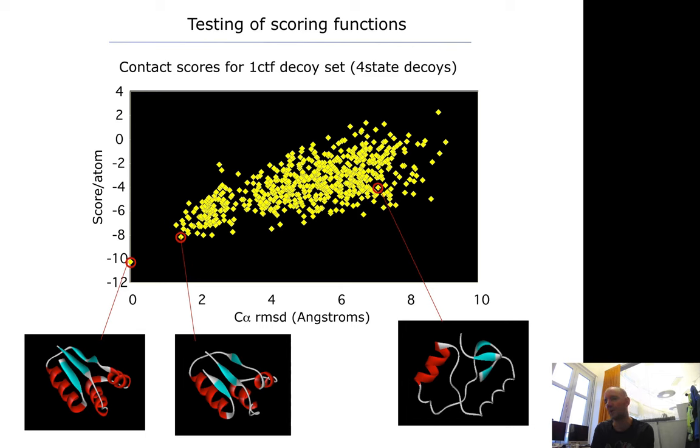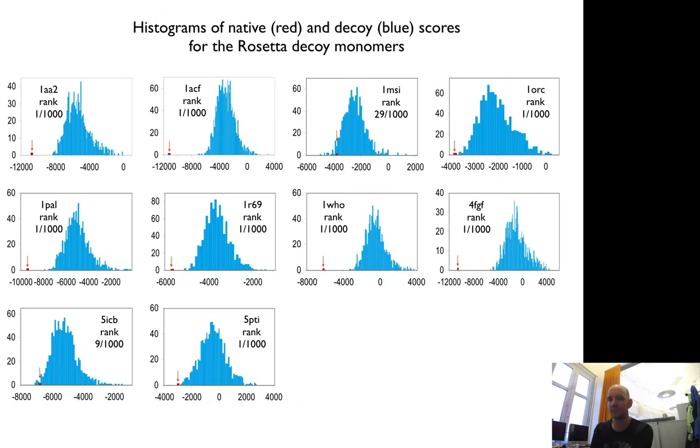However, structures at 7 or 8 angstroms RMSD - as you see there - have some parts of the assembly, but it's not all correct. The folding topology is not correct. They ran this, and for large decoy sets they found the best one was very similar to the native structure, but not always. In some cases you find something that is not as good - like in one case it was only ranked at 29 out of 1000.